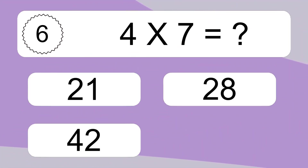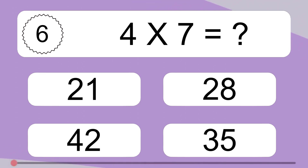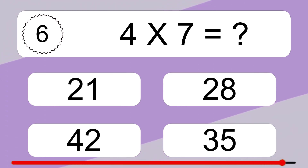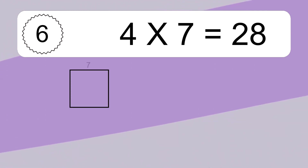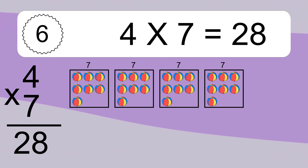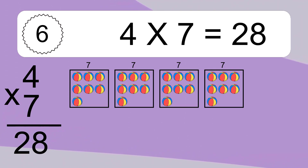4 times 7 equals what? We have 4 boxes, and each box has 7 colorful balls inside. If you count all the balls in all the boxes together, you will have 4 times 7 balls. This equals 28 balls.